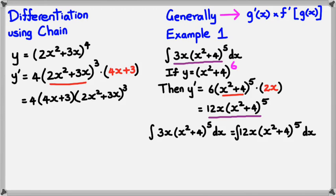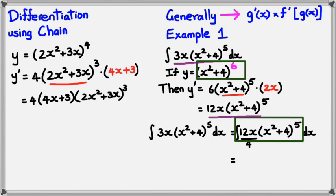I could write this as 12x divided by 4, because 12x divided by 4 gives me 3x. From this point, I know that 12x times (x squared plus 4) to the power of 5 integrates to (x squared plus 4) to the power of 6. So I can replace that whole thing as a quarter multiplied by (x squared plus 4) to the power of 6, because that's what differentiates to the expression in the previous step. And of course, I have to add plus c.